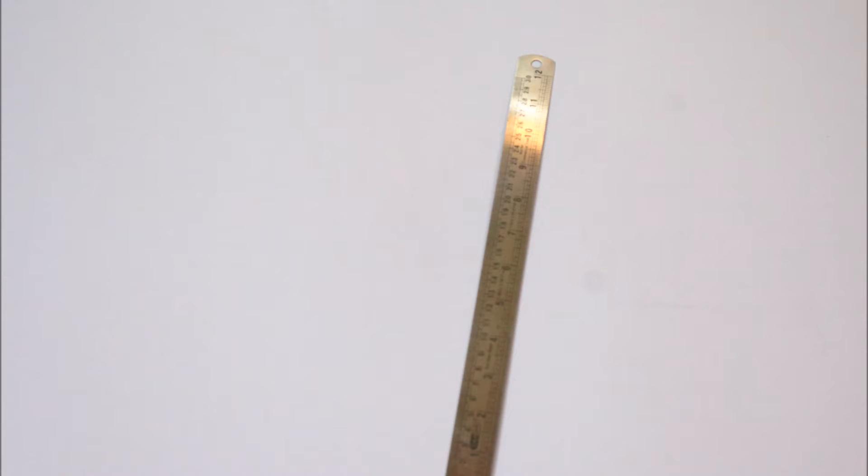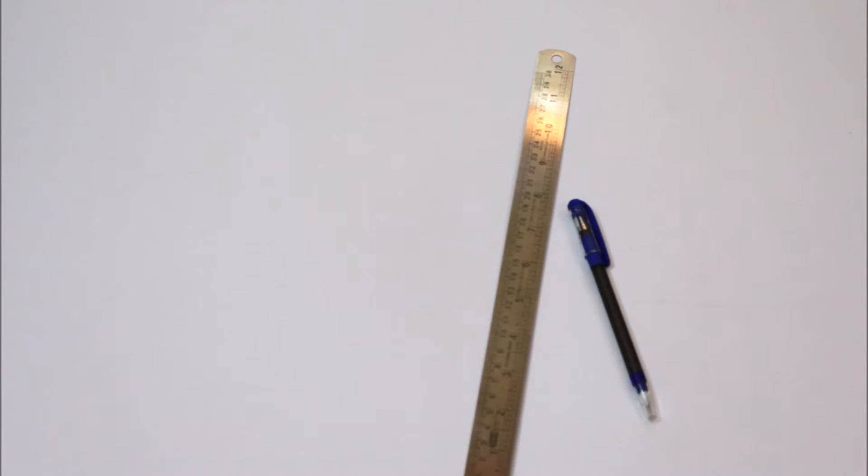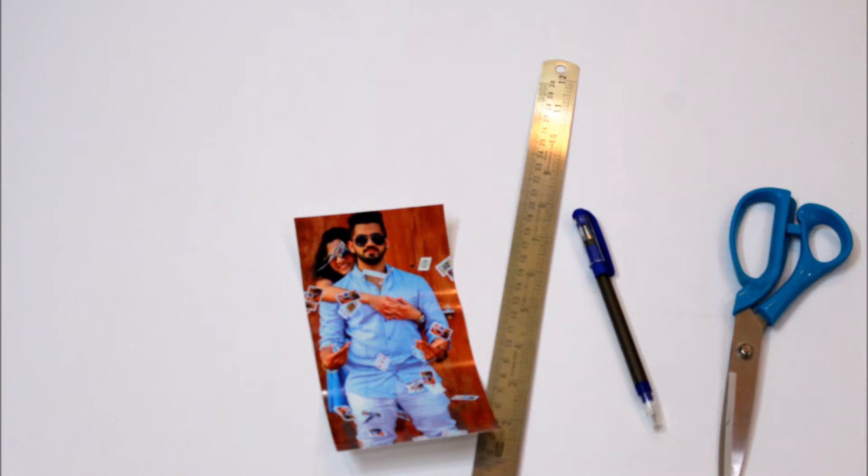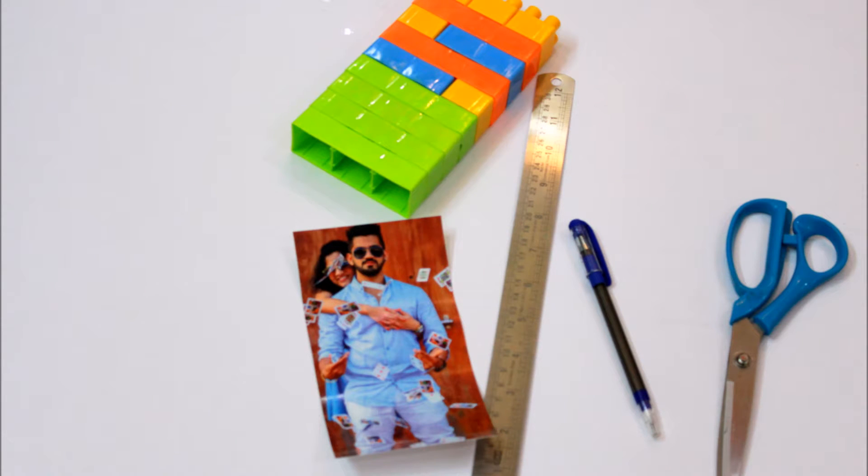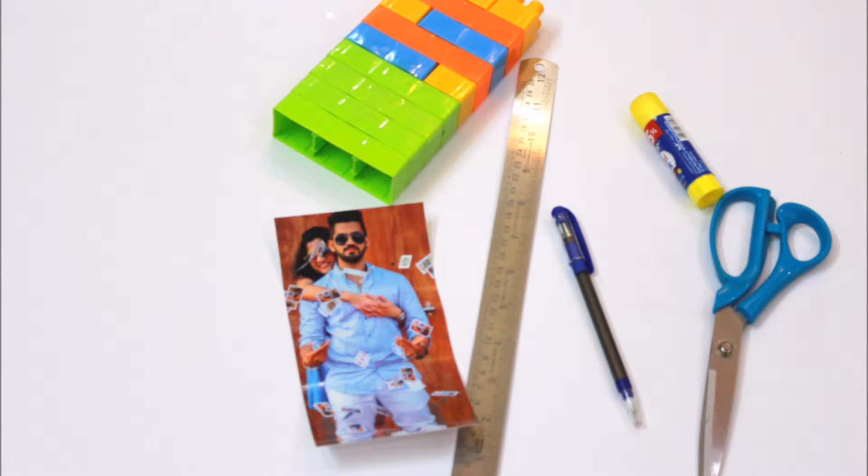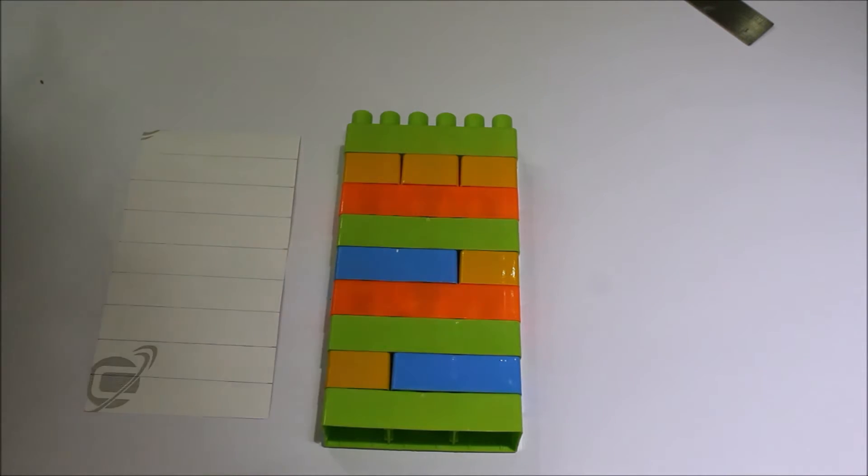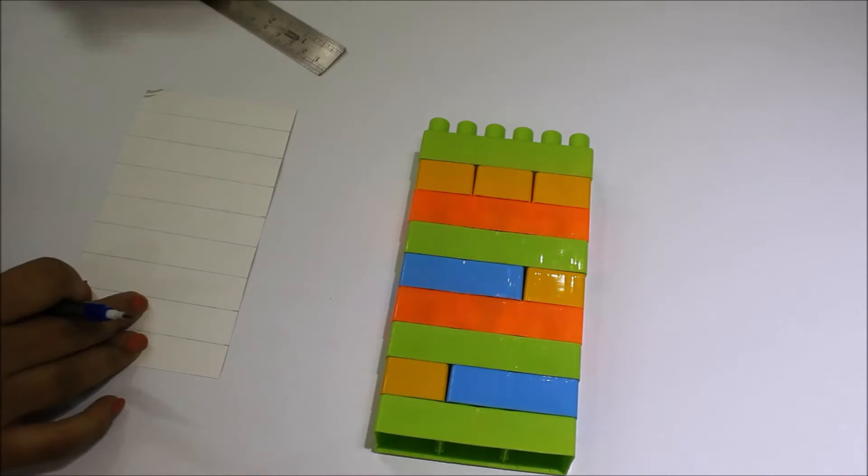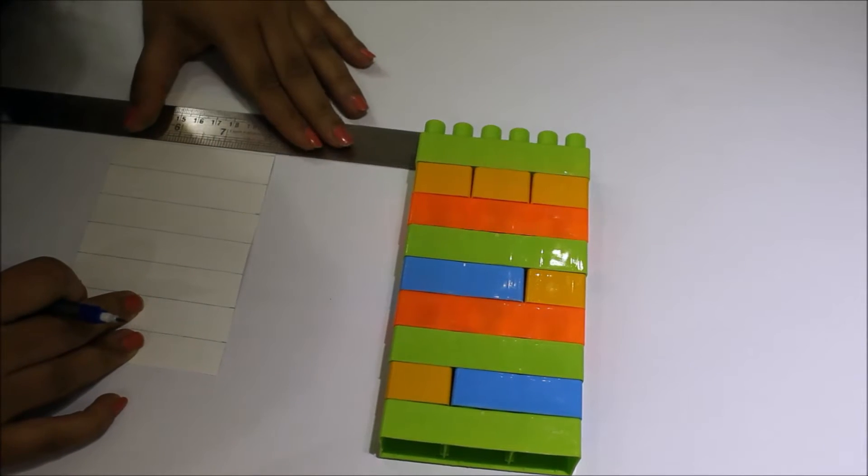For this you'll require a ruler, a pencil, scissors, a good quality photograph, some building blocks, and glue. First of all, decide the sizes of the blocks you want to use. I've mixed up the biggest, the medium, and the smaller ones. You can use either all big ones or however you feel like.